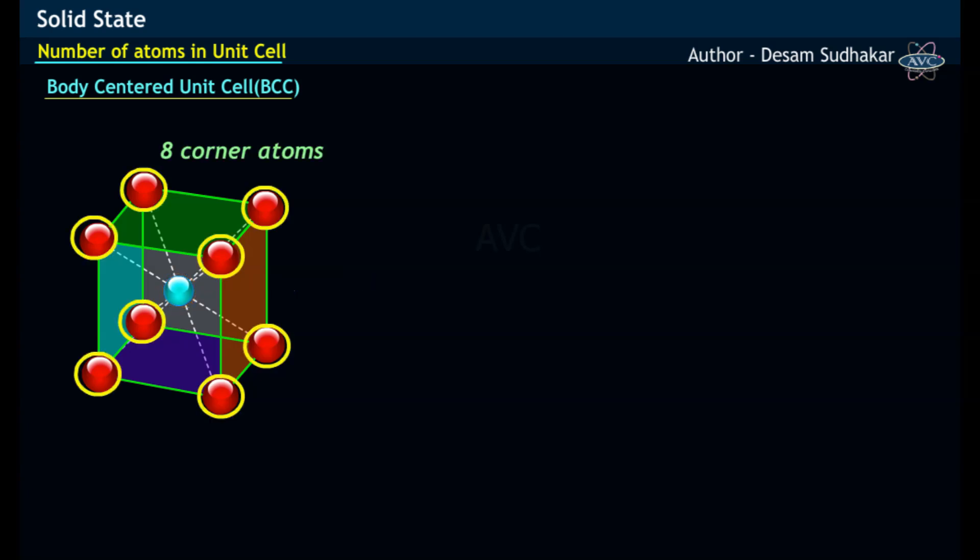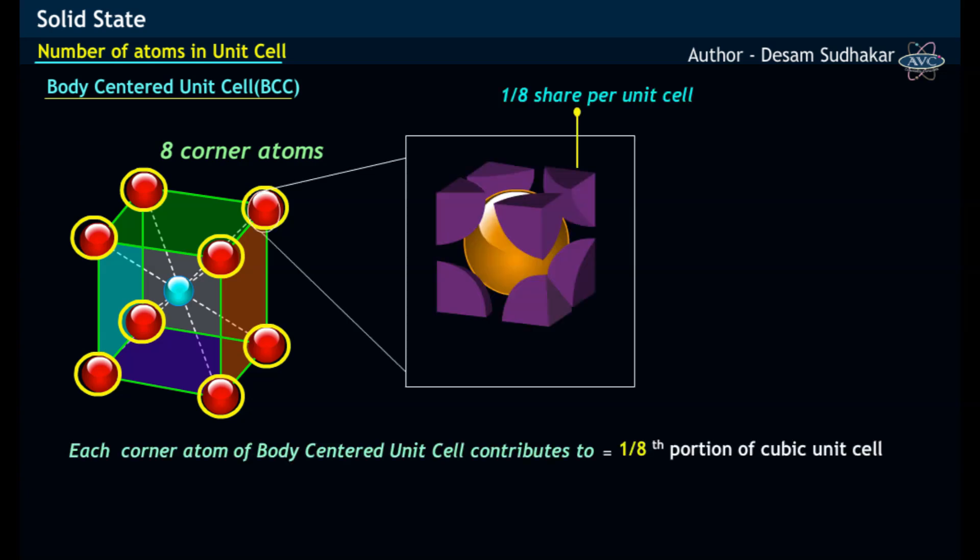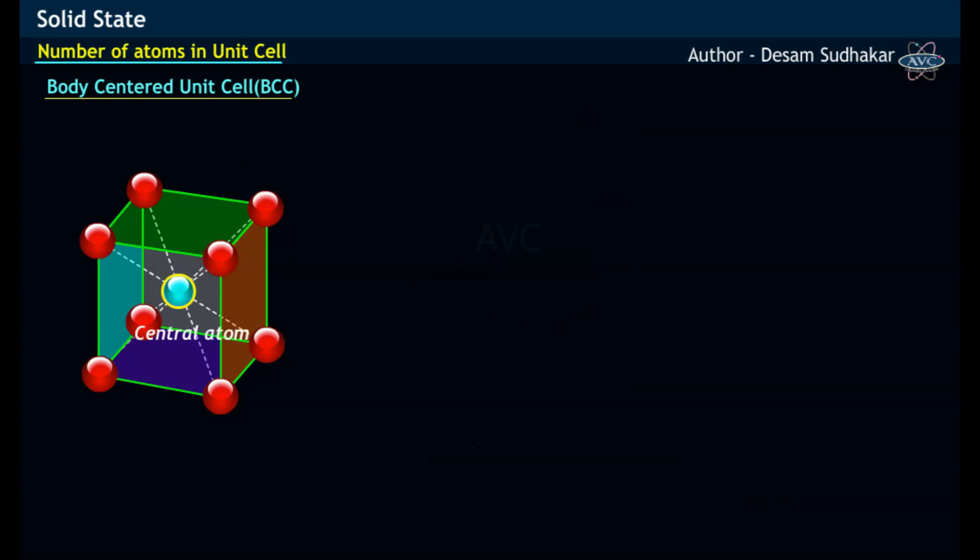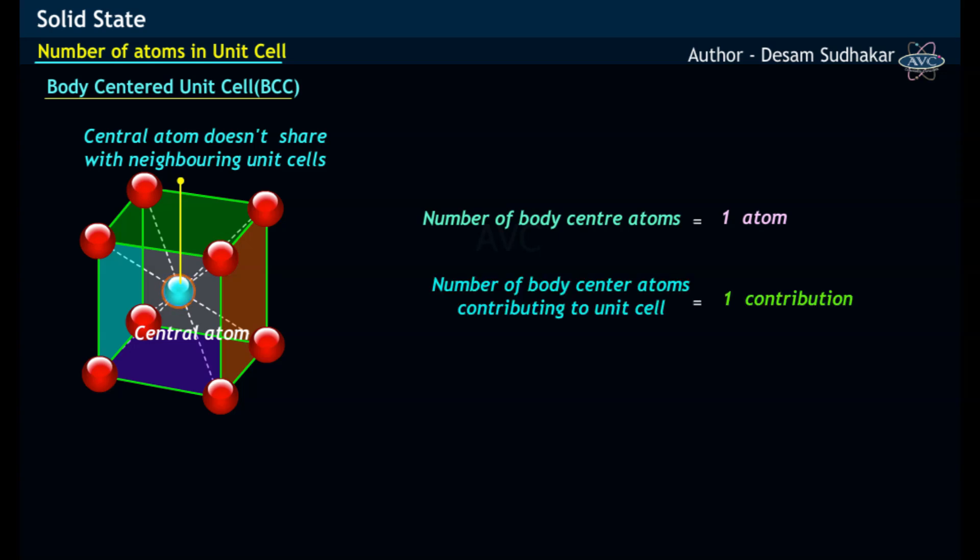The eight corner atoms of body-centered cubic unit cell contributing one-eighth each provide one atom per unit cell, while this centrally placed atom, which is not shared by neighboring unit cells, contributes one atom per unit cell.